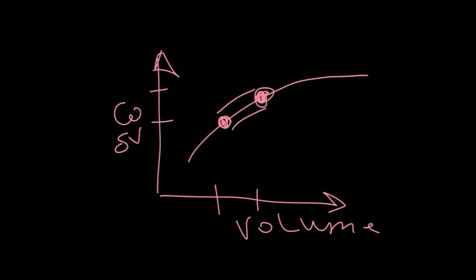As the volume status increases, the cardiac myocytes get stretched, and you can see it from going from this point to this point. As the volume status goes up on the x-axis, the cardiac index or cardiac output is going to go up on the y-axis.